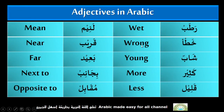Pratab — Wet. Khata — Wrong. Shabut — Young. Kathir — More. Qaleel — Less. La'eeb — Meem. Qareem — Near. Ba'eed — Far. Bijanir — Next to. Muqabila — Opposite to.